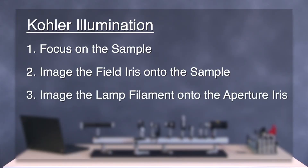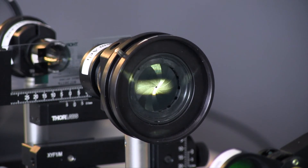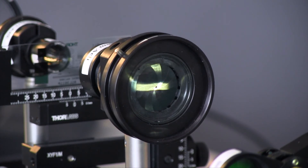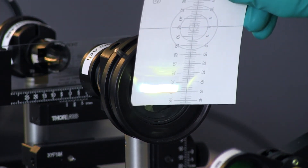The third and final step is to image the lamp filament on the aperture iris. Open the field iris and move the collector lens back and forth until you can see the filament centered in the aperture iris. You can put in the green filter for better visibility. It is also helpful to use a card in front of the aperture iris to see the filament.